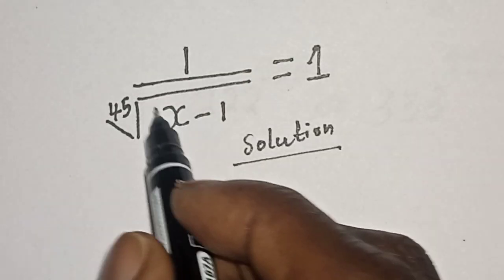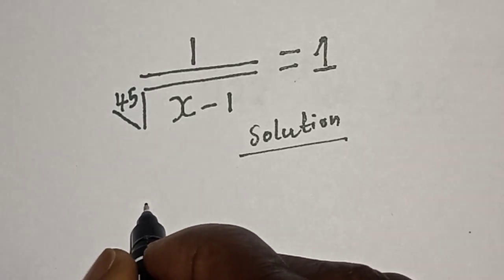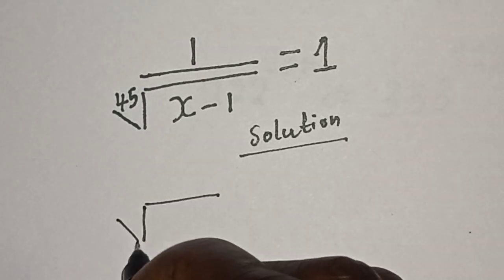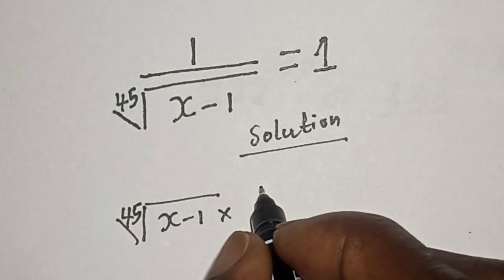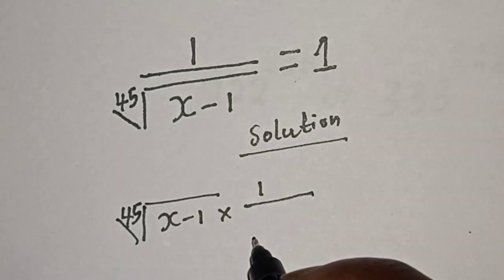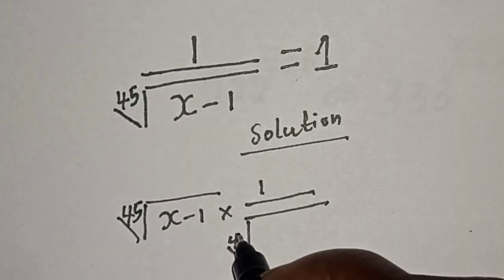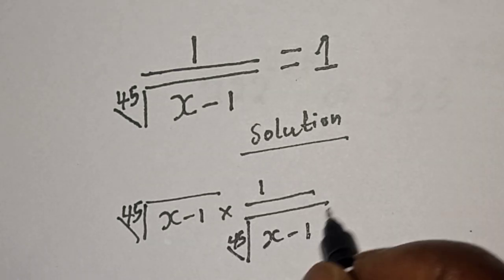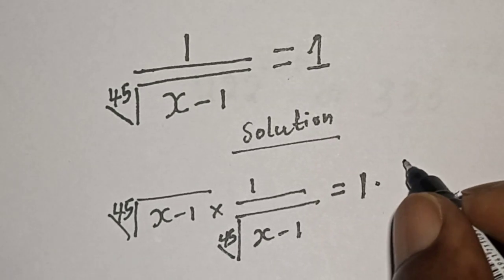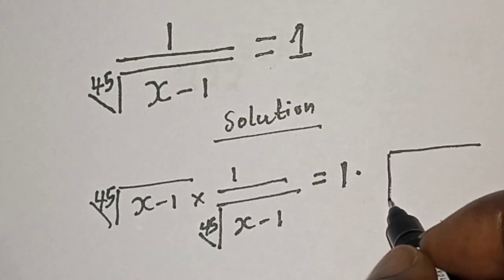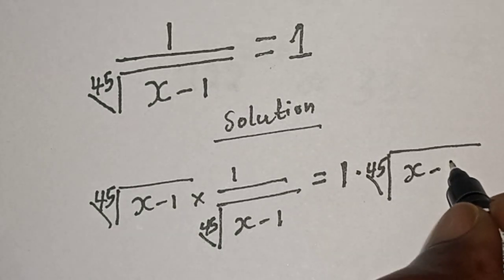Let's multiply both sides of the equation by 45 root of x minus 1. That is, 45 root of x minus 1 multiplied by 1 over 45 root of x minus 1 is equal to 1 multiplied by 45 root of x minus 1.